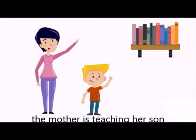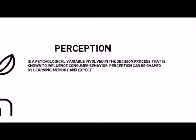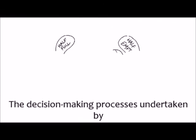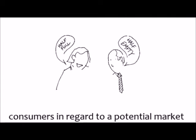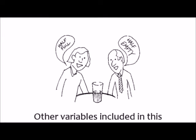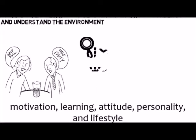For example, the mother is teaching her son which books to buy. Perception is a psychological variable involved in the decision process that is known to influence consumer behavior. Perception can be shaped by learning, memory, and expectation. It is also the organization, identification, and interpretation of sensory information in order to represent and understand the environment. The decision-making process undertaken by consumers regards a potential market transaction before, during, and after the purchase of a product or service. Other variables included in this consumer process include motivation, learning, attitude, personality, and lifestyle.